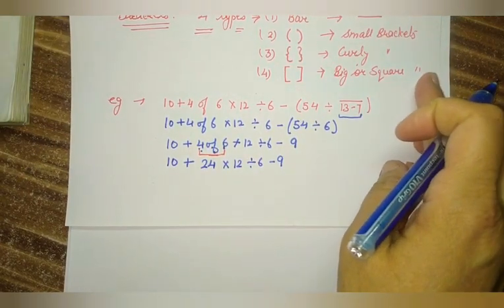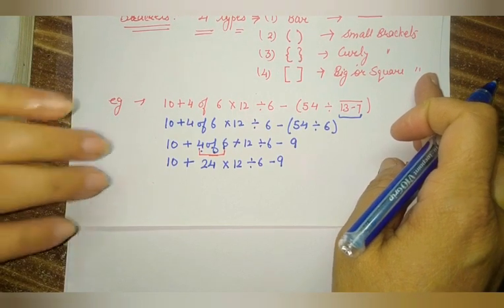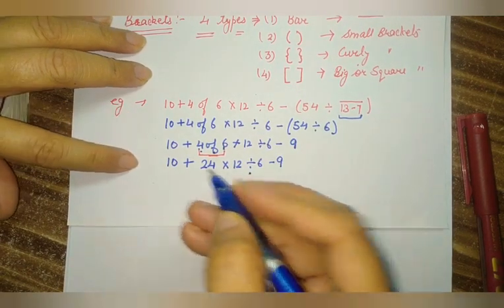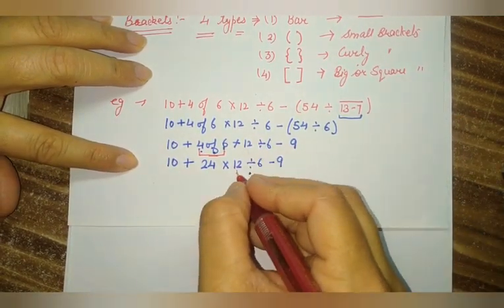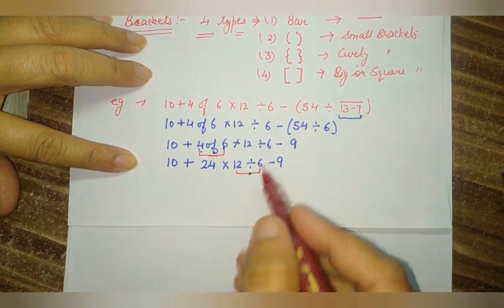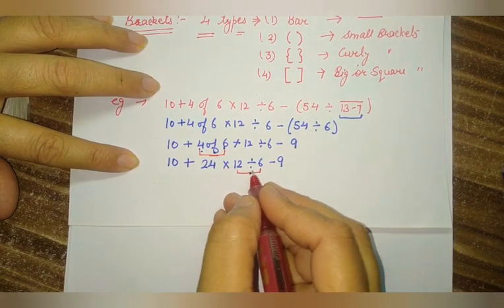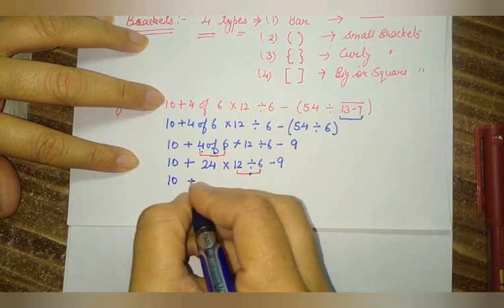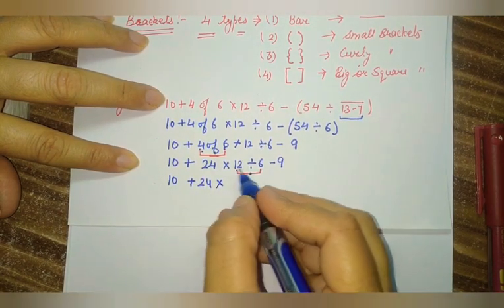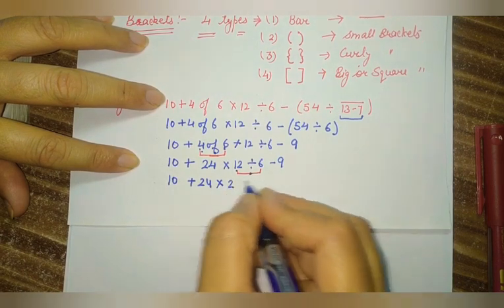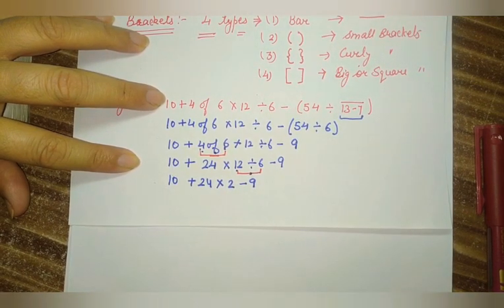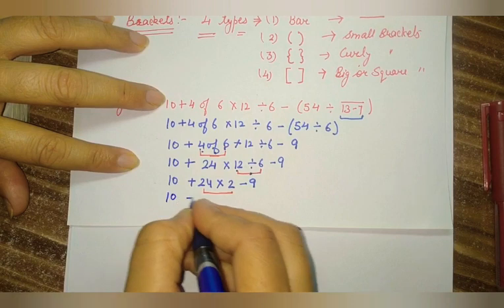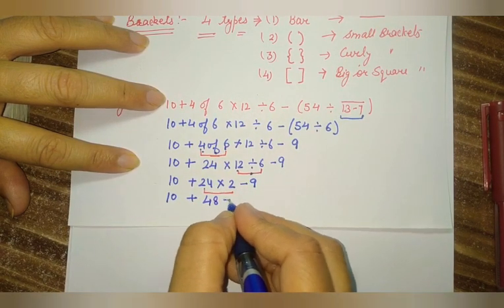Okay friends. We have solved the division. Now it is the turn of Multiplication: 10 plus 24 times 2 equals 48 minus 9. After this, Addition: 10 plus 48 equals 58, minus 9. And at the last, we solve our Subtraction.